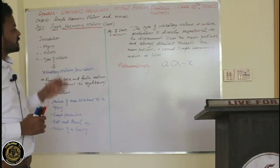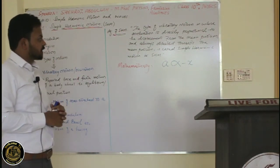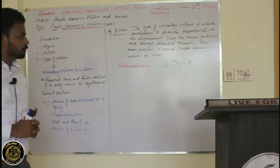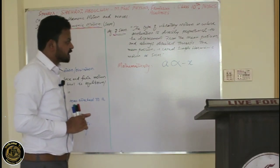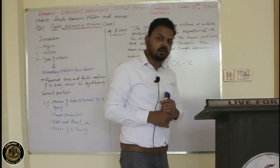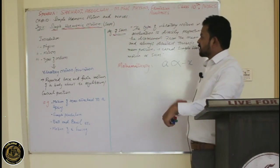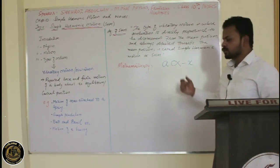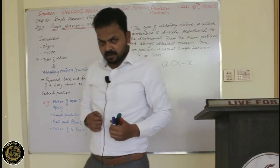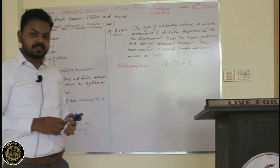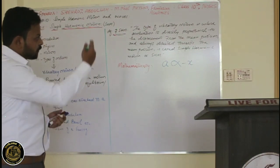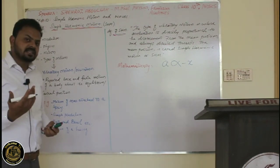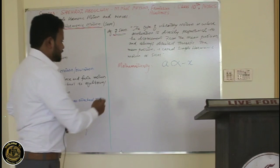Simple Harmonic Motion is the type of vibratory motion in which the acceleration produced is directly proportional to the displacement from the mean position and always directed towards the equilibrium position. Mathematically, we can say a is directly proportional to minus x, where a represents acceleration and x represents displacement. We will further proceed with the example of a mass attached to a spring.